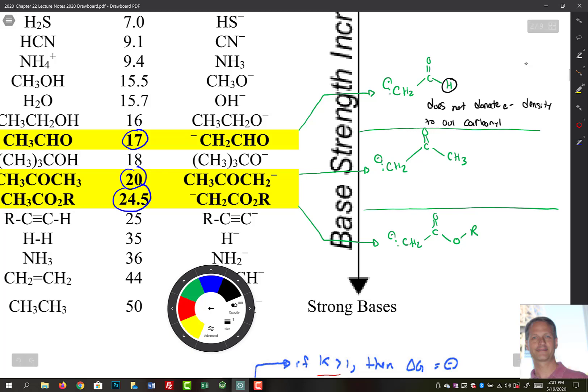So remember if we had something electron withdrawing that would make the conjugate base more stable. And if we look over here, here's an R group. So if you recall, alkyl groups donate electron density, and because of this it destabilizes our conjugate base.